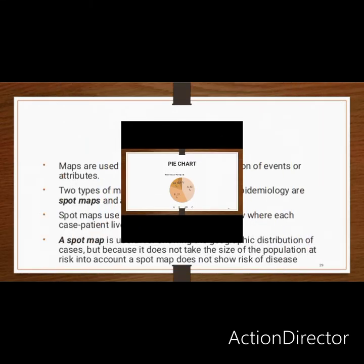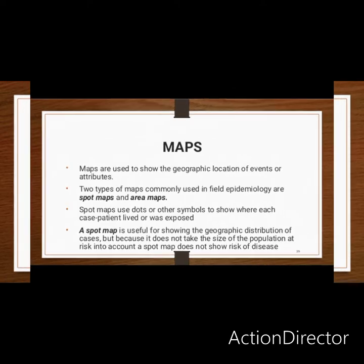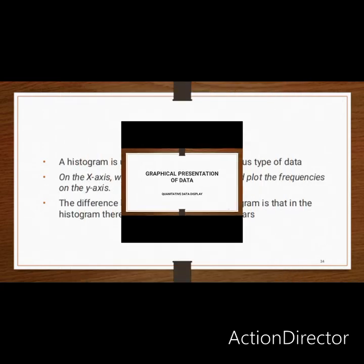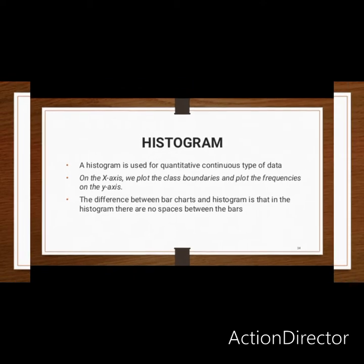The next method is maps. We also use maps as methods of qualitative data presentation. We have two types: spot maps and area maps. Spot maps are used to denote areas of concentration, showing dots to indicate locations. Area maps show the population and the area affected, indicating the number of persons affected in a given place. Maps are mostly used in epidemiological studies.